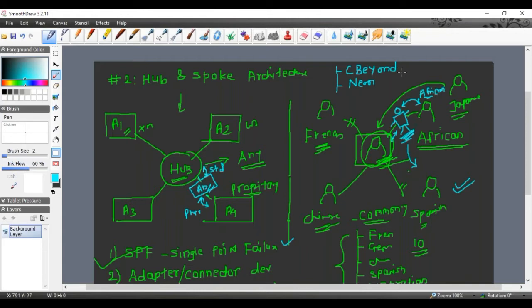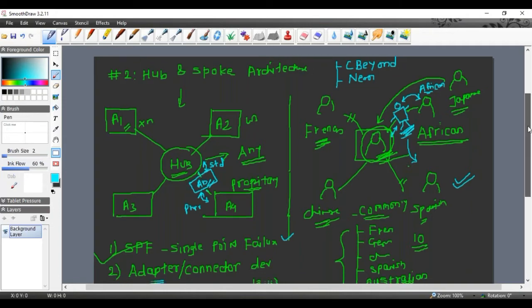These products are not taking their names anywhere in the competition. They are not in the leaders of integration. Maybe some companies might be using this product, but I don't see it anywhere in the market. What is the reason hub and spoke architecture didn't really work well?